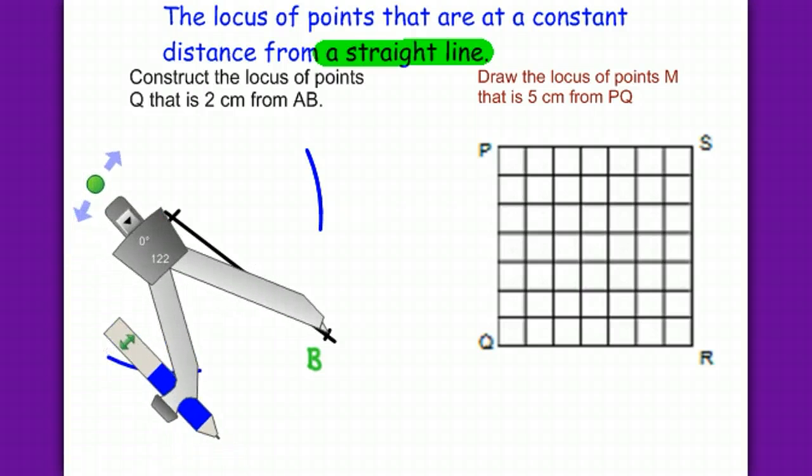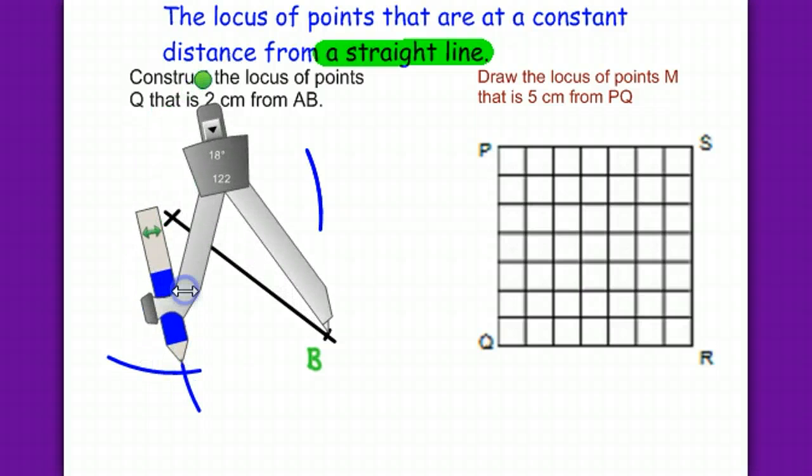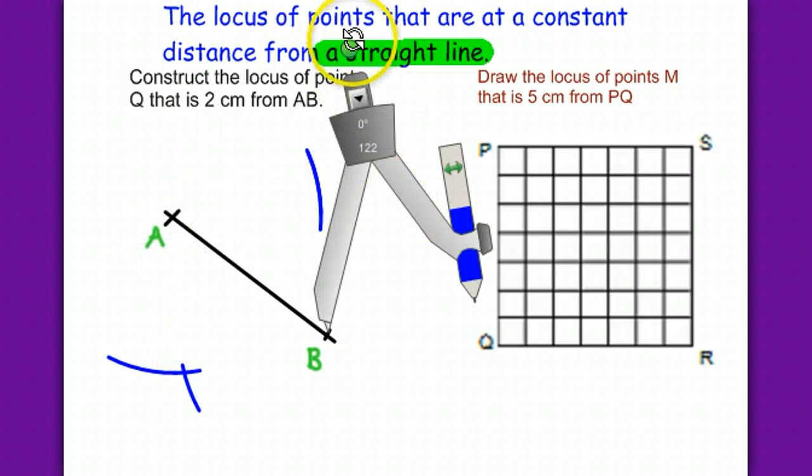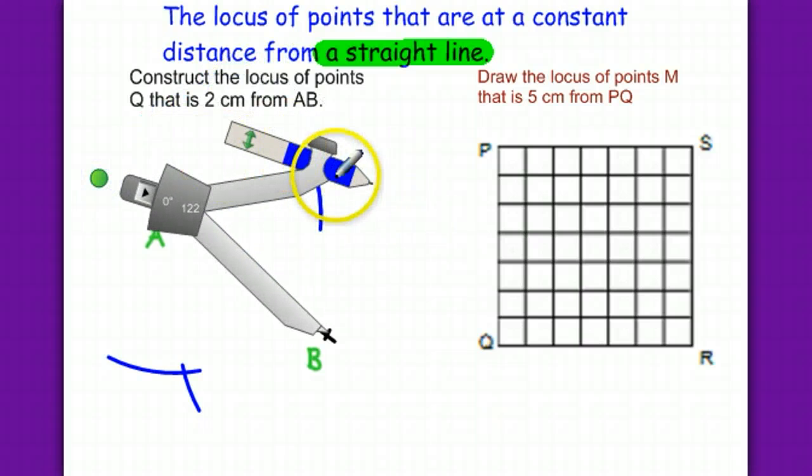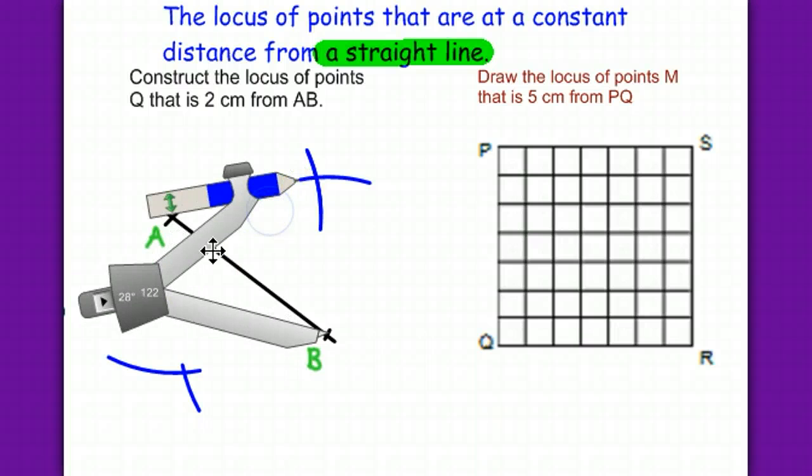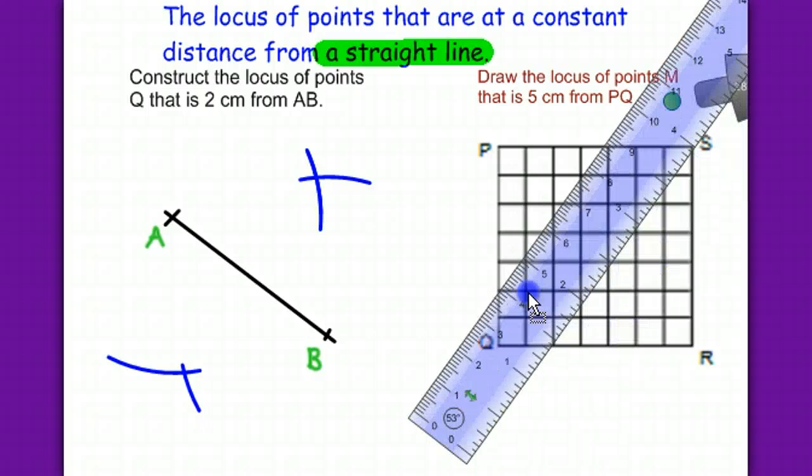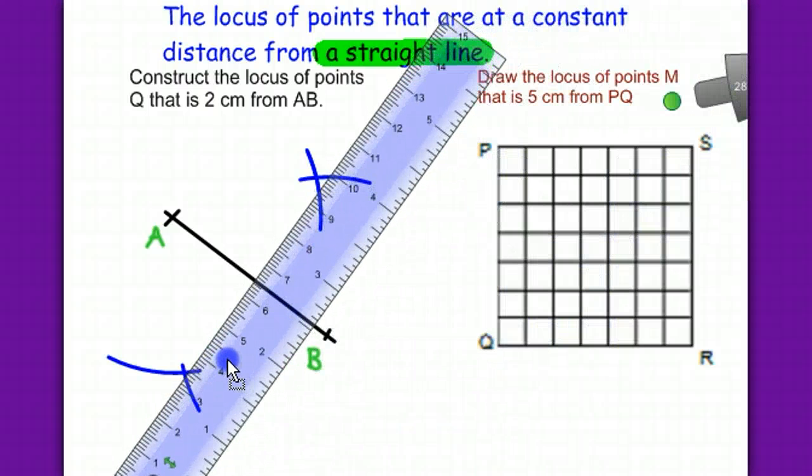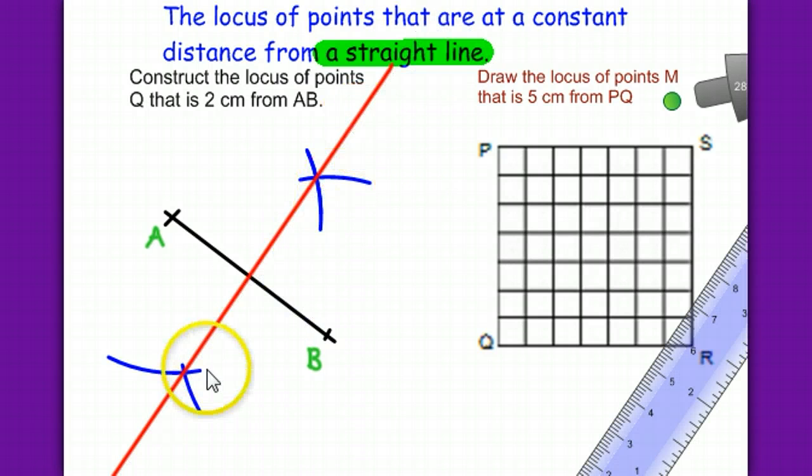Cut the first curve, and repeat the same on the other side. Cut it as well. Now we have two points here. So we need a ruler so that we can join the two points together. This is a perpendicular bisector to line AB.